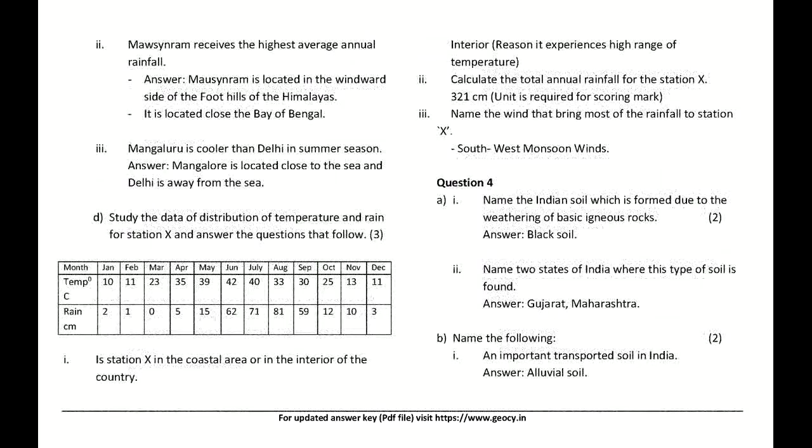Give a reason why Mawsynram receives the highest average annual rainfall. Answer: Mawsynram is located on the windward side of the foothills of the Himalayas and is close to the Bay of Bengal. Give a reason why Mangaluru is cooler than Delhi in summer. Answer: Mangaluru is located close to the sea while Delhi is far from the sea.